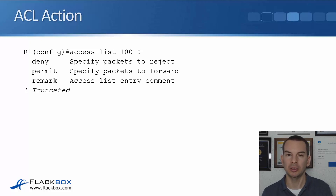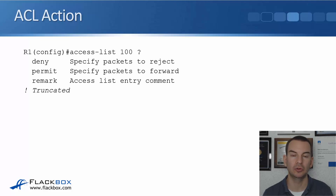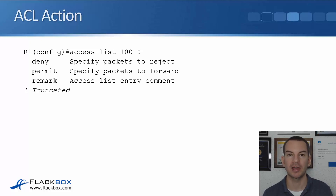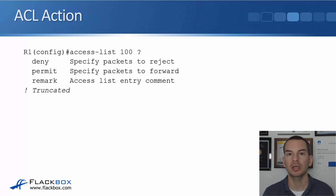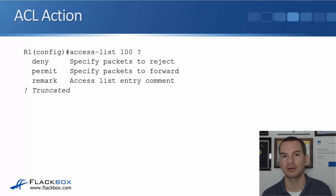For example, let's say that currently you've got an extranet connection to a business partner, so you put a line in your ACL to permit that traffic. Well, maybe two years down the line we're not a business partner anymore. And if another administrator is looking at the ACL, they're not going to know what that line was there for and might not remove it because it could do some damage. If you put a remark in there explaining what the access control entry line is for, they would know it's not required anymore and that they can safely remove it.